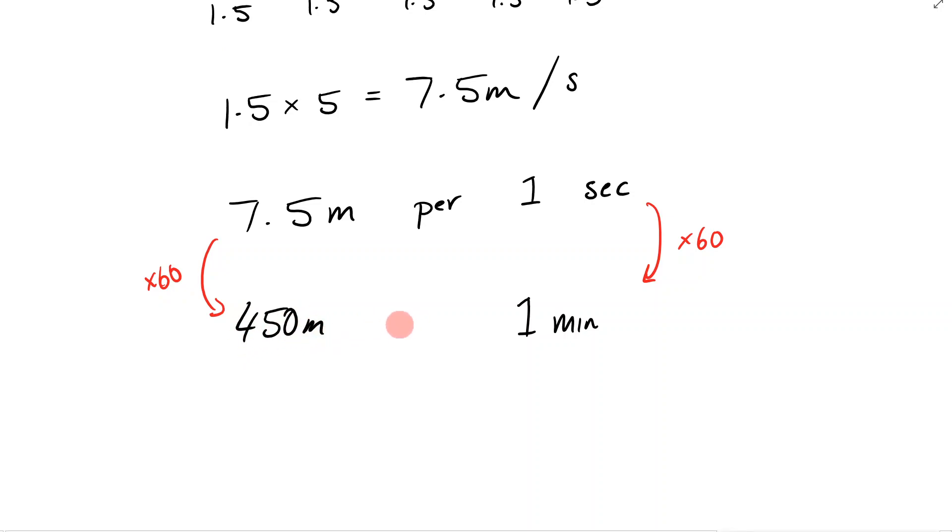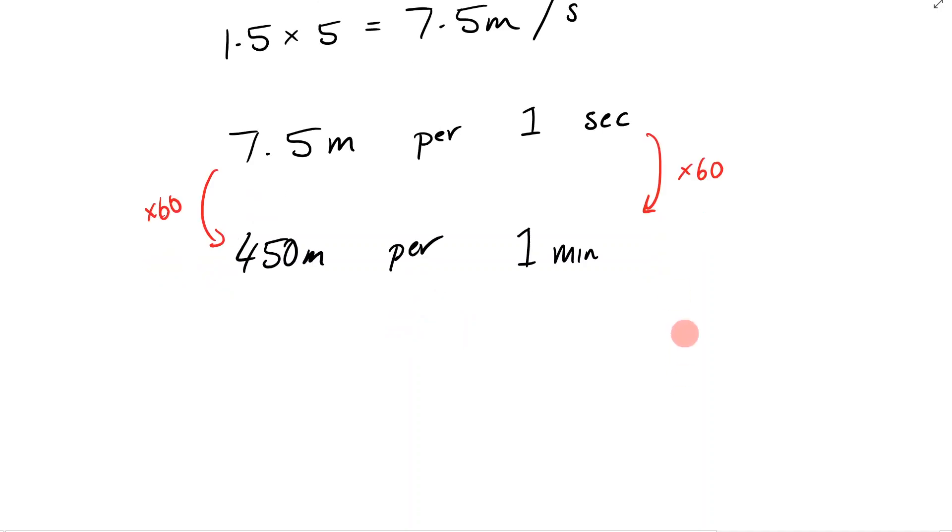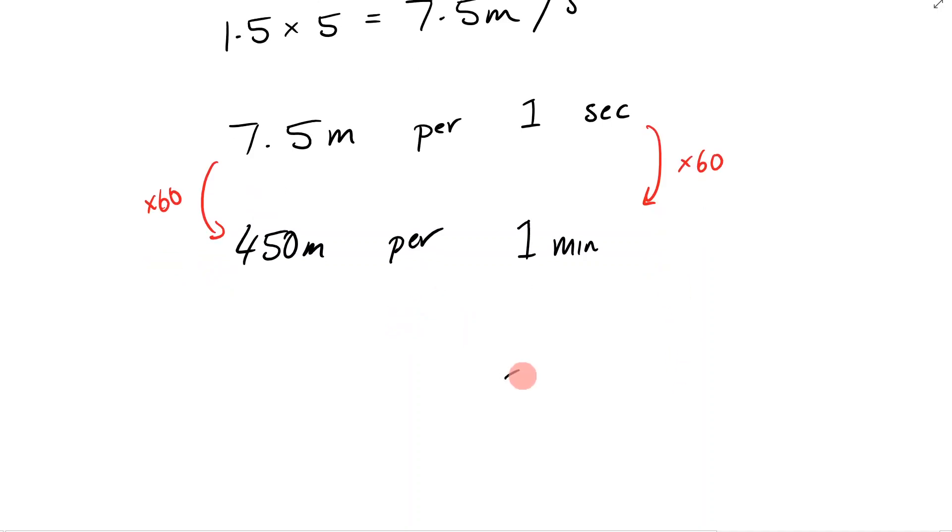450 meters per one minute. But remember, we don't want one minute, we want one hour. So how do I go from a minute to an hour? Well, I just times by 60 again because there's 60 minutes in an hour. So 450 times 60 is going to be—there's a big number right there.